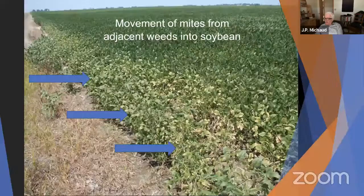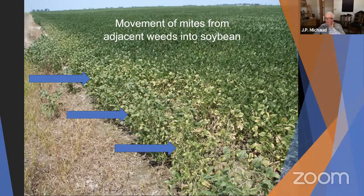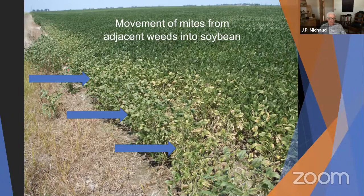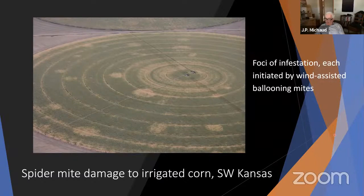There are many different things that can trigger mite migration — very often some sort of weed control activity. What might look a lot like herbicide drift is actually damage to a soybean field by spider mites that were driven off the weeds by roadside application of herbicide. All along the edge of the field, you see damage is localized along the field border. In another situation, you can see various spots in a field where spider mites have managed to establish colonies and spread out — no edge effects — each initiated by mites ballooning on the wind.